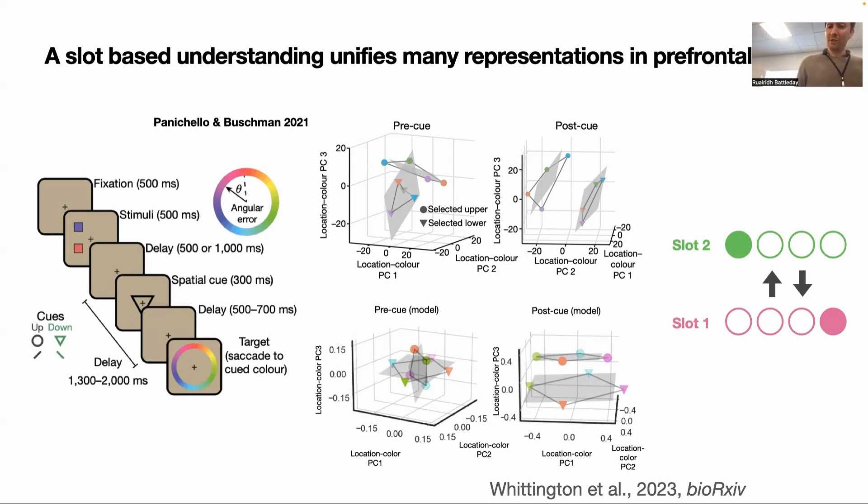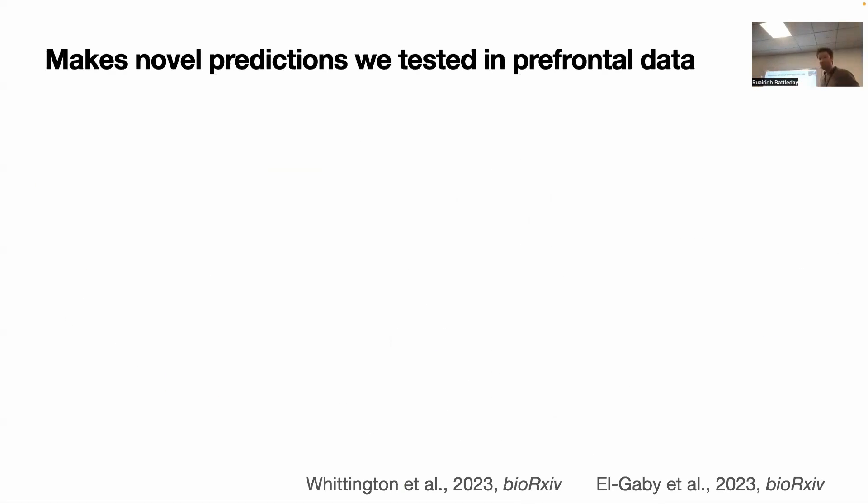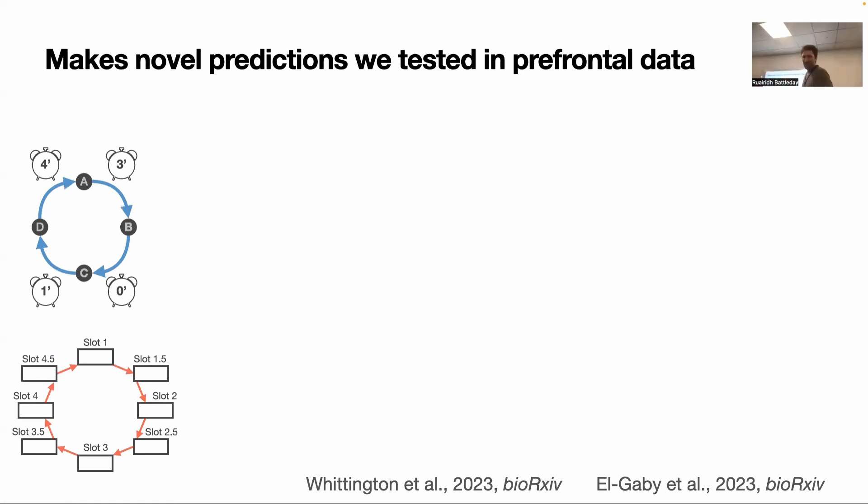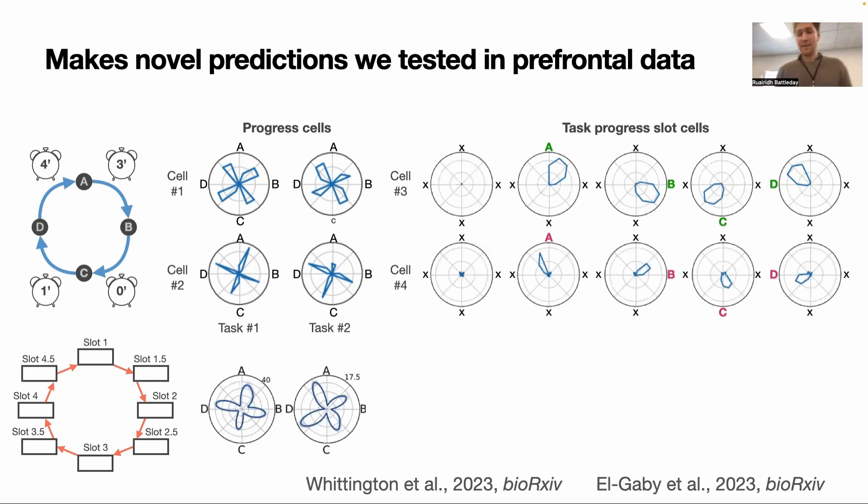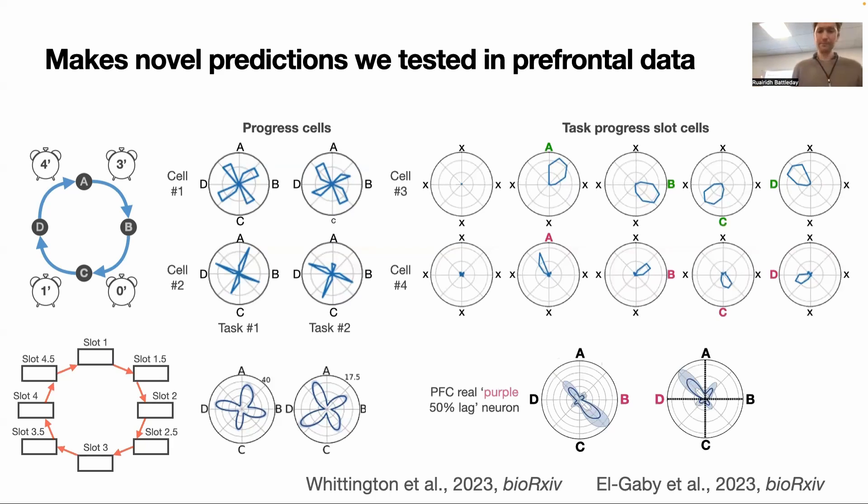This idea doesn't just capture the past data, but we also developed a new experiment to capture this, which I don't think I'll have time to go through. But it's a similar sort of task. We're just doing many things in order. Now there's a delay. This model makes predictions of a new class of cells, sort of progress cells, which now sort of clock you through progress. Because now what the contents of each slot is, there's a delay period between each slot, so I need to sort of progress it through some pseudo slots, some fake slot. That's what you need these progress cells for. We find them in the brain as well. And then we also find these funky slots as well. We also find them in the brain as well.